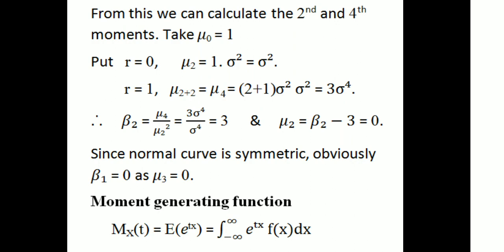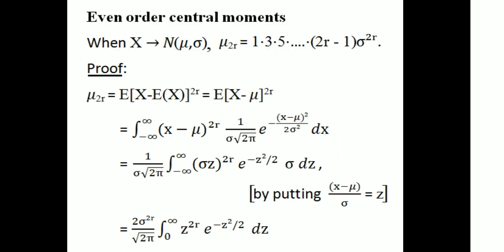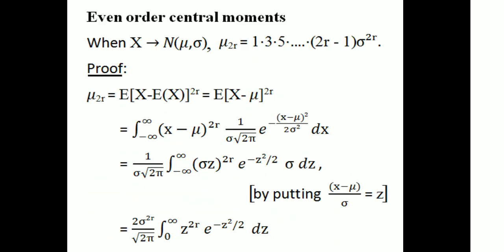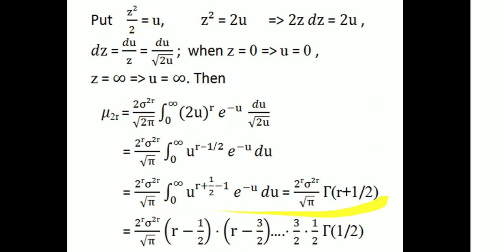Since the normal curve is symmetric, μ₃ equals 0. Normal distribution is symmetric about its mean, so all odd-order central moments equal 0: μ₁ equals μ₃ equals 0. In summary: odd-order central moments of normal distribution equal 0, proved using the odd function property of the integrand. Even-order central moments are given by μ₂ᵣ equals 1×3×5×⋯×(2r−1)×σ²ʳ, derived using the gamma function.